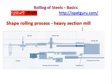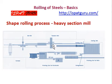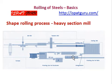One can see the layout of a heavy section mill, which includes a reheating furnace, a roughing mill, a reversing strand, a tandem mill, a cooling bed, and the finishing area.